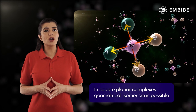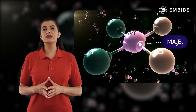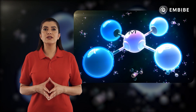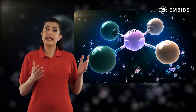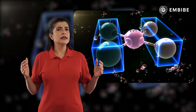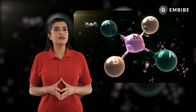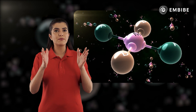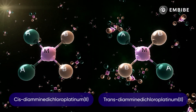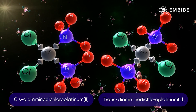However, square planar complexes do exhibit geometrical isomerism. Consider the ma2b2 type of complex, where m denotes the central metal ion while a and b denote unidentate ligands. When both a ligands are at adjacent positions, and likewise for b ligands, this isomer is named the cis isomer. Another orientation places identical ligands opposite to each other, designated as the trans isomer. Cis-diaminedichloroplatinum(II) and trans-diaminedichloroplatinum(II) are the respective examples.